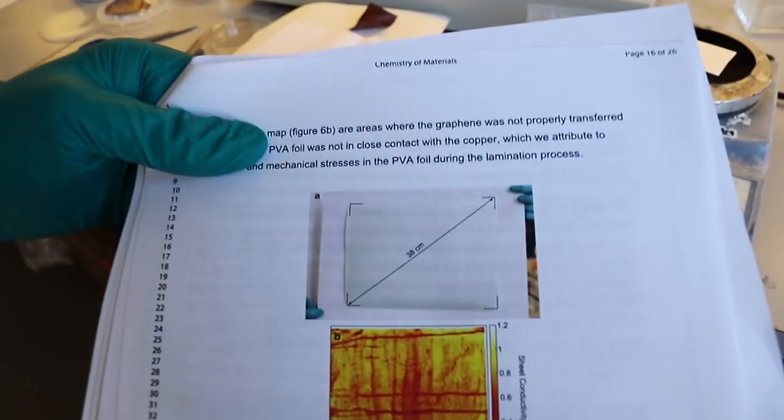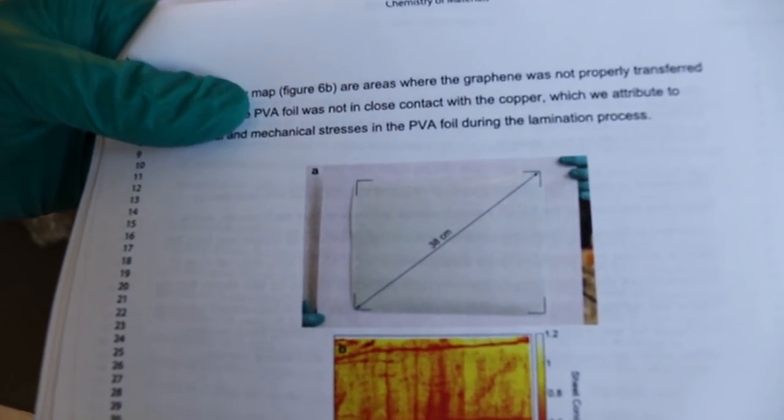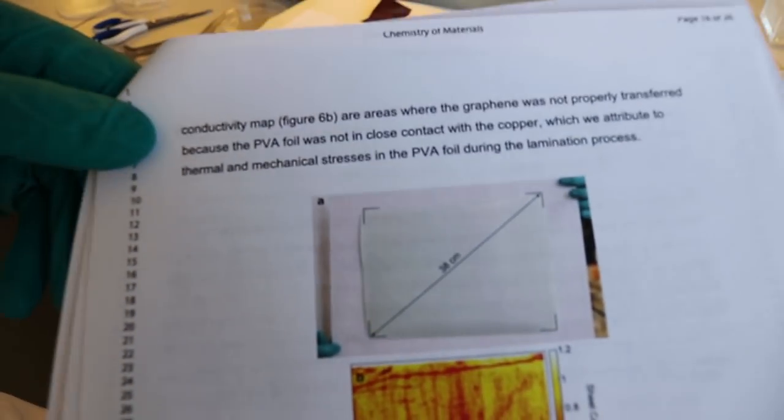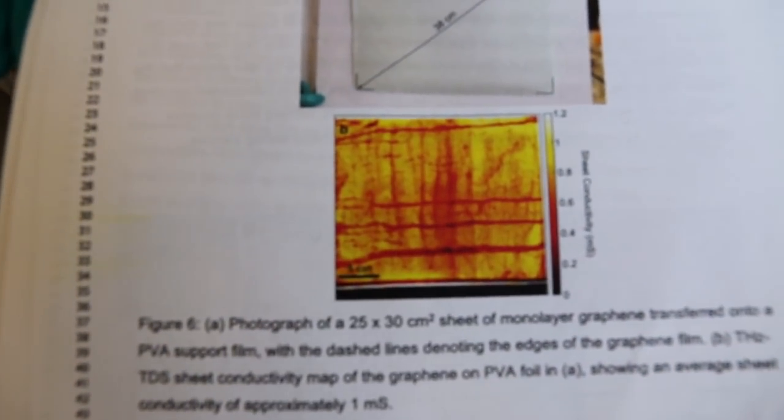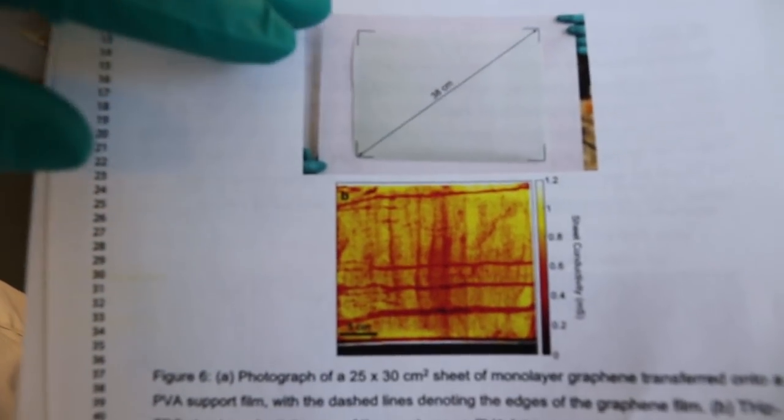See here, it's transferred A4 sheets of graphene using this method. So the top one is a photograph of A4 PVA foil with graphene on top, just as the one that we had, which has been ripped off the copper foil. What is that we see below? This is the terahertz conductance map of the graphene on the PVA foil from the image above.